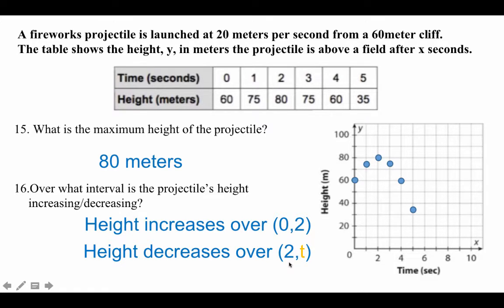What is the interval when the projectile's height is increasing? Well, when it's increasing, it's coming up to 2, so it's from 0 to 2. Height increases over the interval 0 to 2.